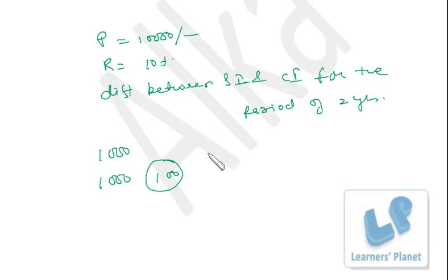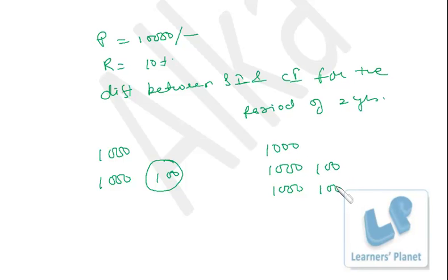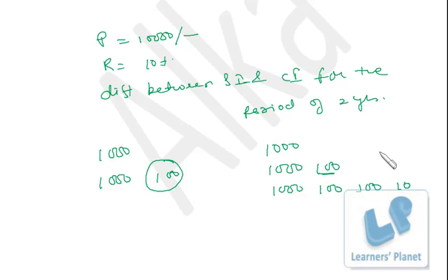Now if we extend the same question to 3 years, even then you don't need a formula. Simple interest every year will be 1,000 for each of the 3 years. Then for the first year's 1,000, you earn 10% interest in the second year (100) and 10% in the third year (100). For the second year's interest-on-interest of 100, you earn 10% in the third year — that is Rupees 10. So the difference between compound interest and simple interest for 3 years is Rupees 310.